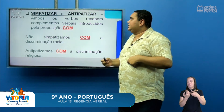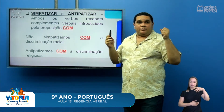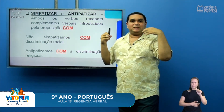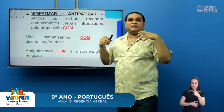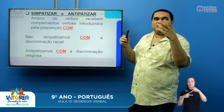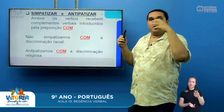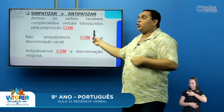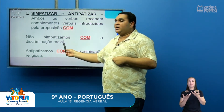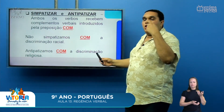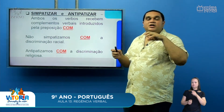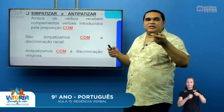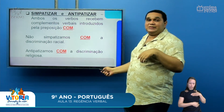Os verbos simpatizar e antipatizar são transitivos indiretos. Com esses verbos, eu sempre vou utilizar a preposição 'com'. Eu sempre vou simpatizar com alguém ou antipatizar com alguém. Exemplo: 'Não simpatizamos com a discriminação racial.' 'Antipatizamos com a discriminação racial.' Com os verbos simpatizar e antipatizar, sempre utilizamos a preposição 'com'.